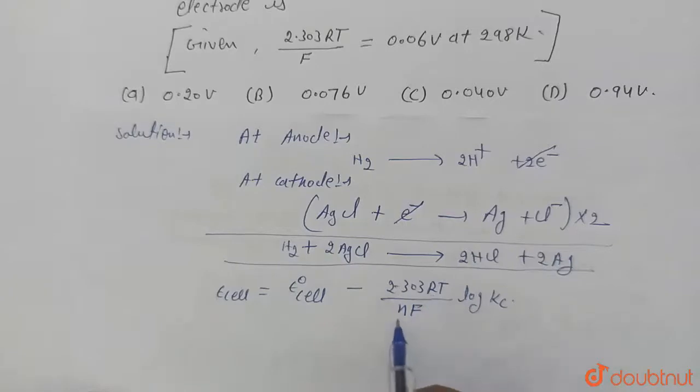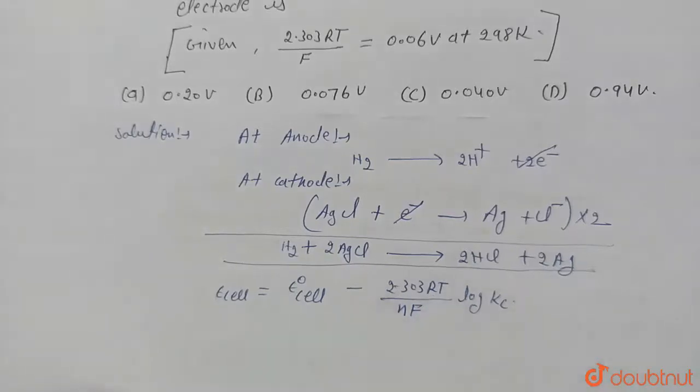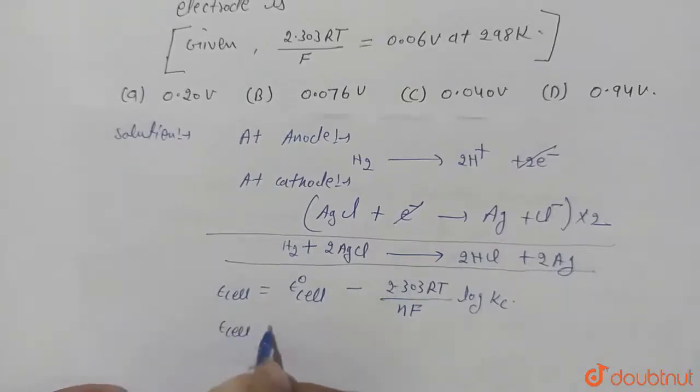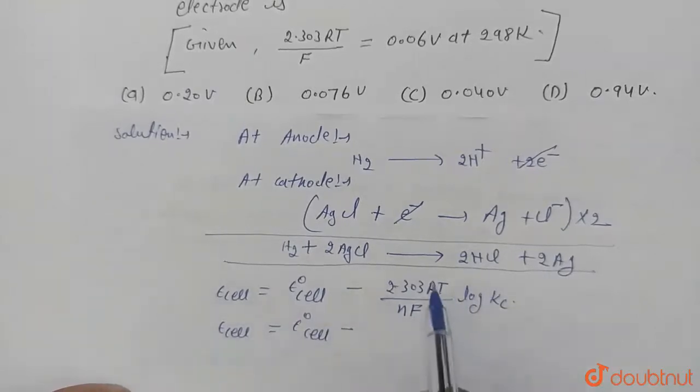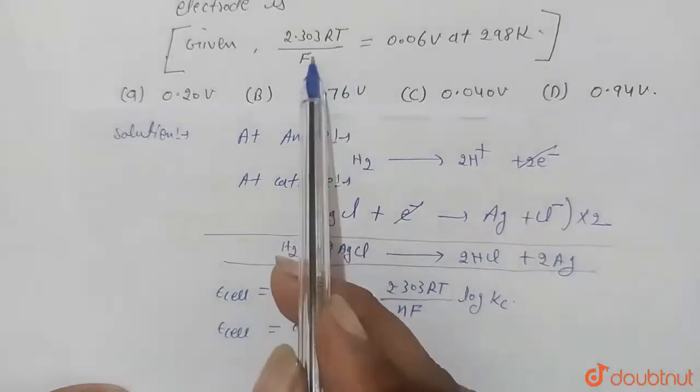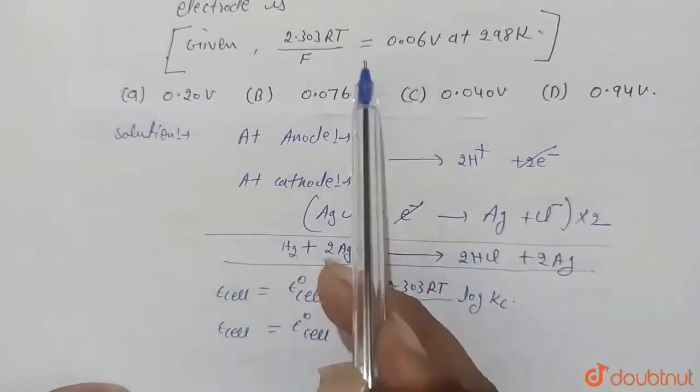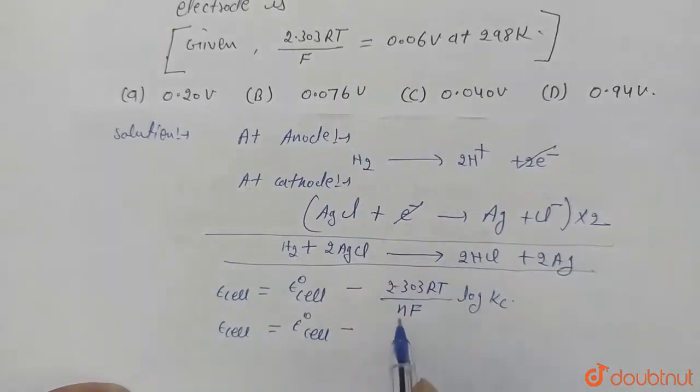Now we put the value of all this. Then E cell equals E naught cell minus value of this will be given in question. Here this value is given, and value of n will be 1. Then it will become 0.06 log, and value of Kc...